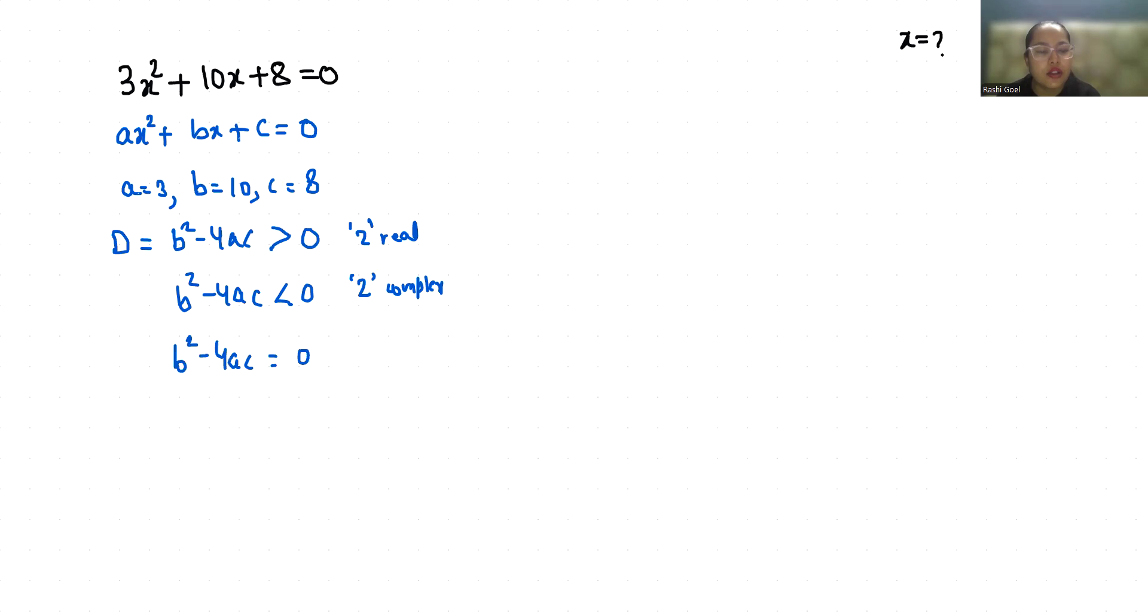So let's find out which condition is verified. b² - 4ac: b is 10, so 10² - 4 times 3 times 8. 10 squared is 100, minus 4 times 3 is 12, times 8 is 96. This gives us positive 4, which means it is greater than 0, so two real solutions exist.